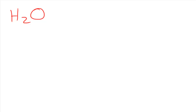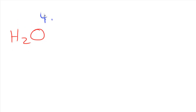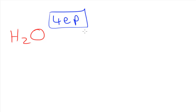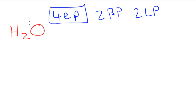Now let's look at H2O — a very familiar molecule. H2O still has four electron pairs. In those four electron pairs we have two bonding pairs and two lone pairs. So we're going to have all three types of repulsion: lone pair–lone pair, bonding pair–bonding pair, and bonding pair–lone pair repulsion.